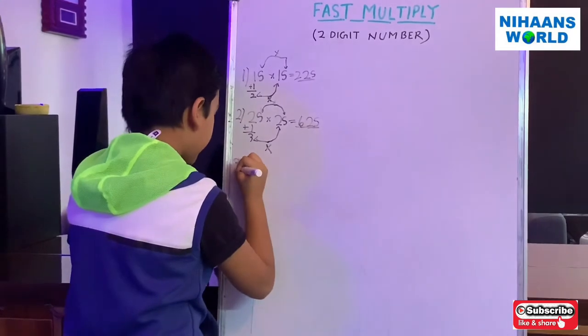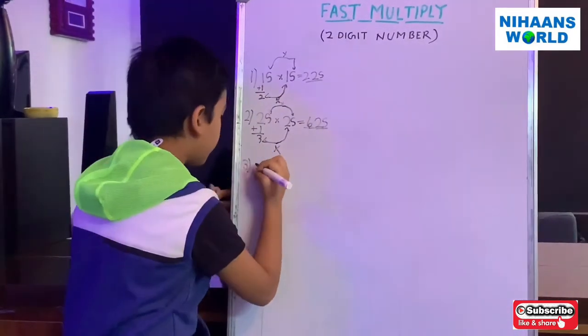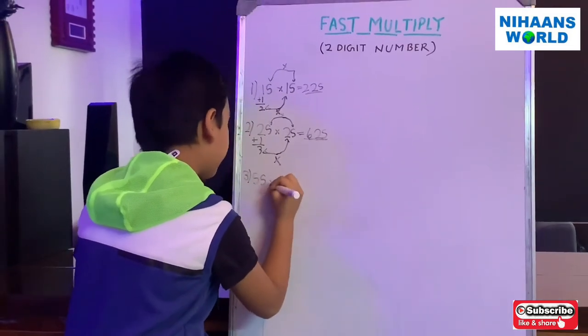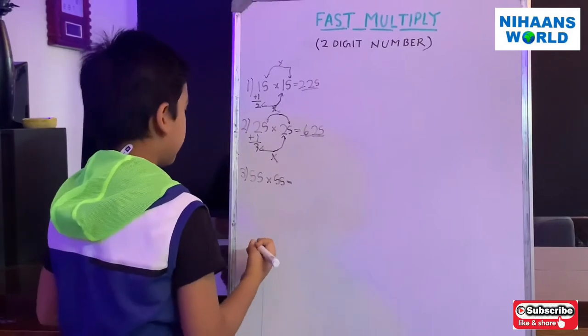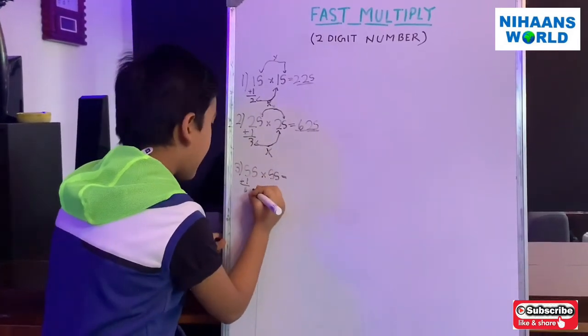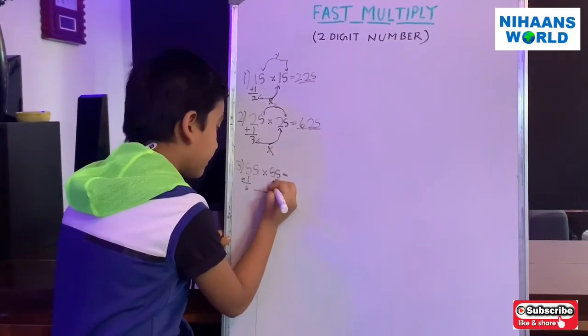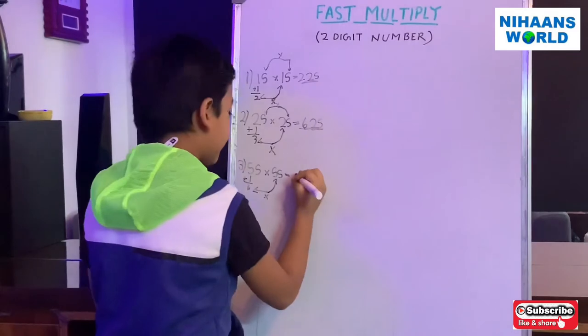So now we are going to the third question. So third question is 55 multiplied by 55 equals. So we already know 5 plus 1 is 6. And we have to multiply 6 multiplied by 5. That is 30.